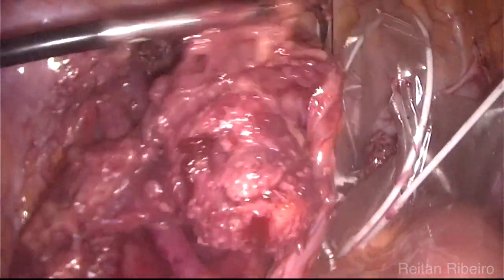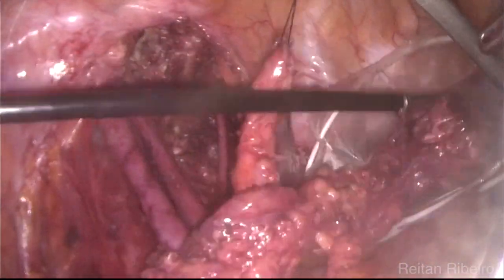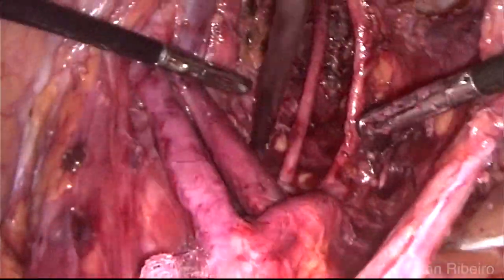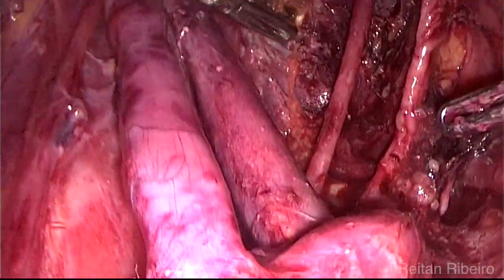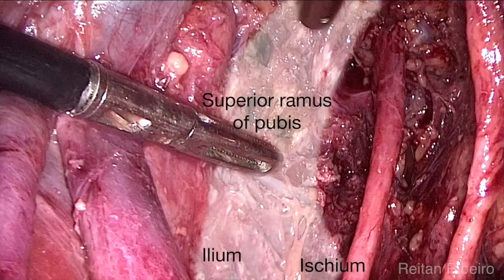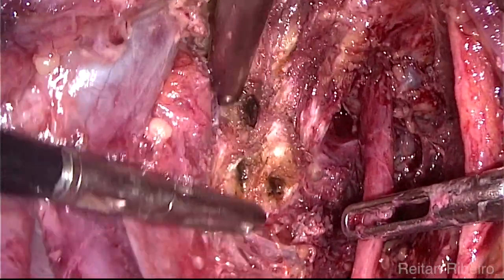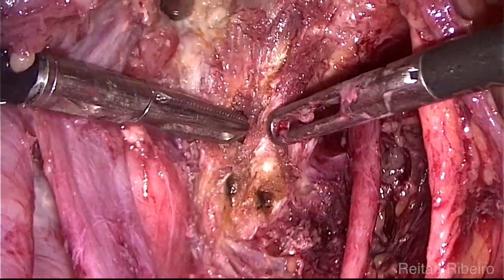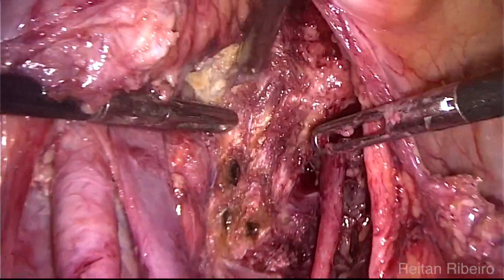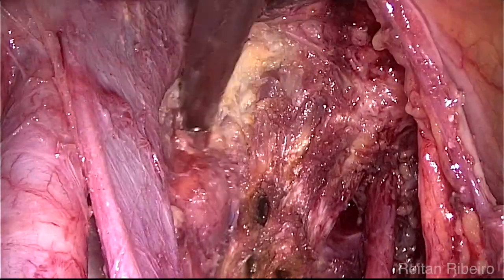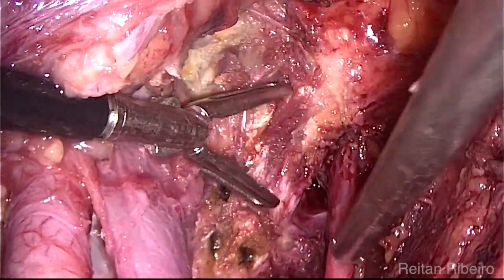The specimen was placed inside an endobag for extraction. This is the final view of the left side, where the ischium, ilium, and pubic bone are seen. The review of hemostasis included the raw surface of the pubic bone. The distal and inguinal portions of the tumor were dissected and resected through an inguinal incision.